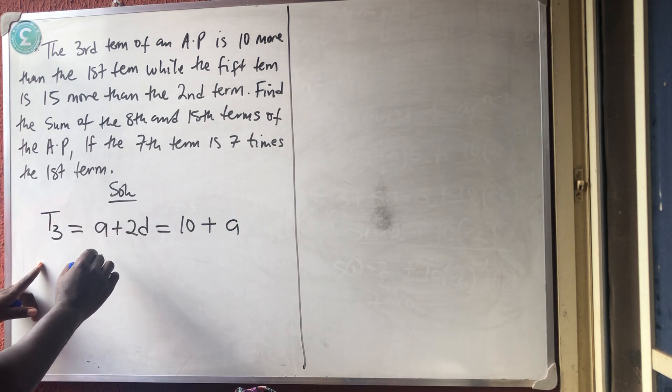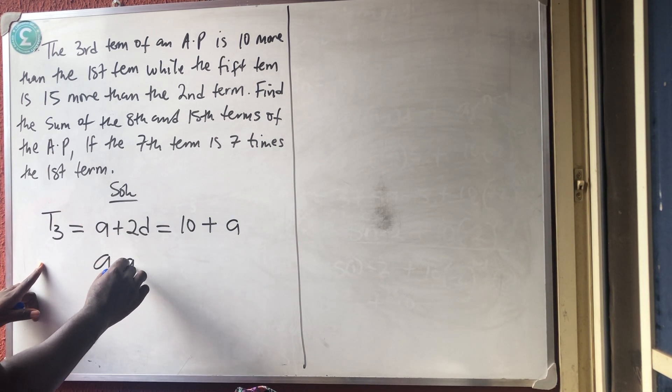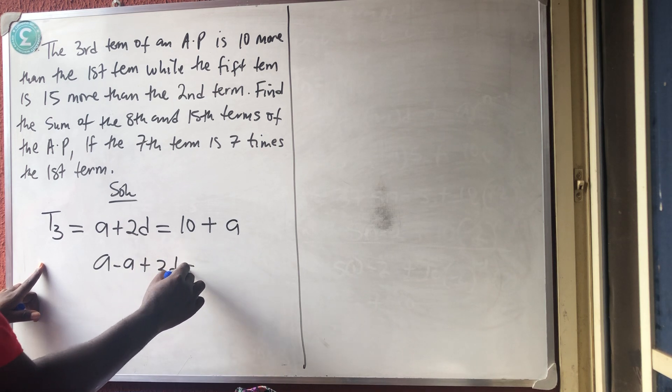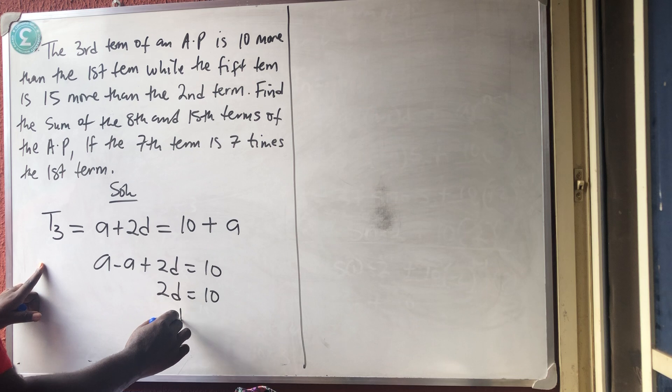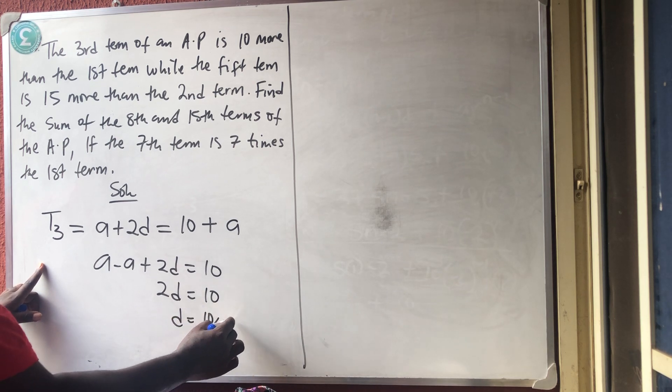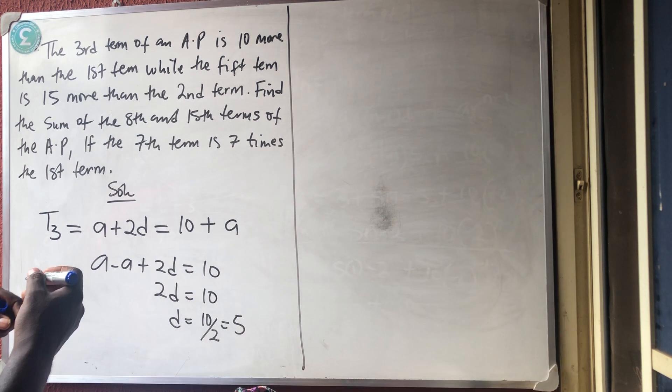So, if I collect items, I'm having that A minus A plus 2D is equal to 10. So, what do I have? 2D is equal to 10. So, my D is equal to 10 divided by 2, which is 5. Okay? I've gotten my D.